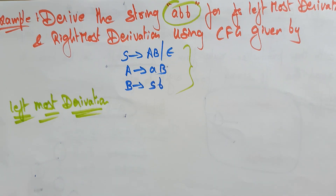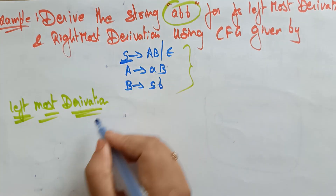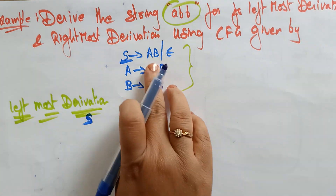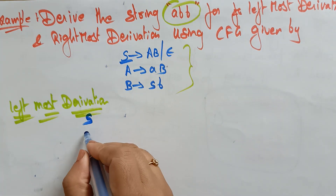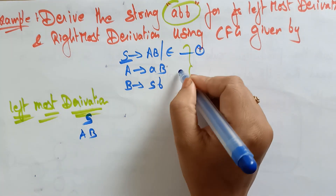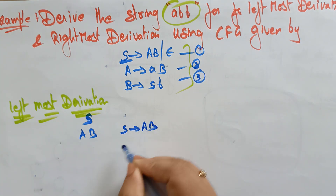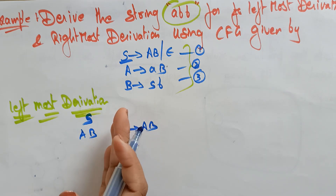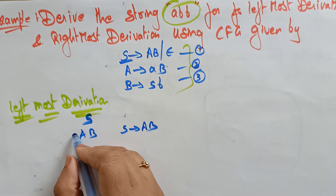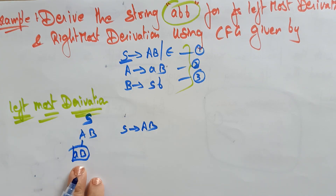In the leftmost derivation, we start with the start symbol S. I am replacing S with aB. So I am using the leftmost derivation — that means I want to replace the leftmost non-terminal first. I am replacing A with small 'ab'.